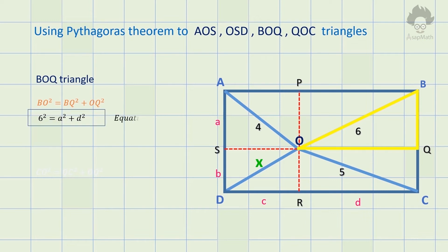At last, consider QOC triangle. CO squared equals QC squared plus OQ squared, so 5 squared equals b squared plus d squared and name this as equation 4.